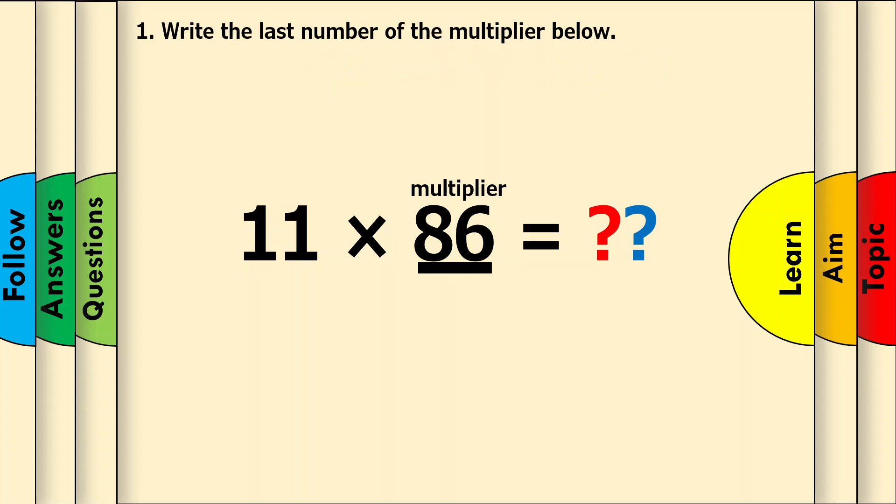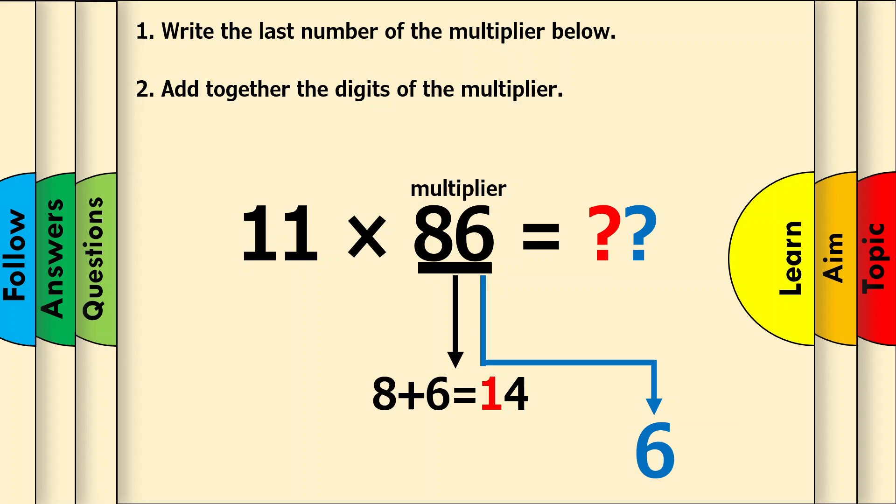First, write the last number of the multiplier below. Since 86 is the multiplier, write 6. Now add together the digits of the multiplier. The two digits are 8 and 6, so do 8 add 6, which is 14.